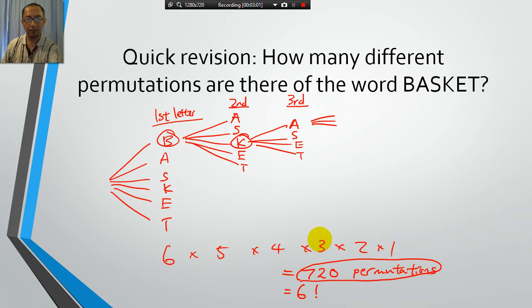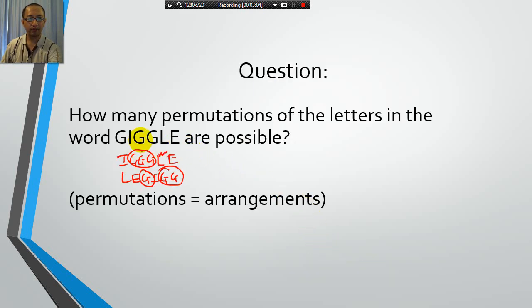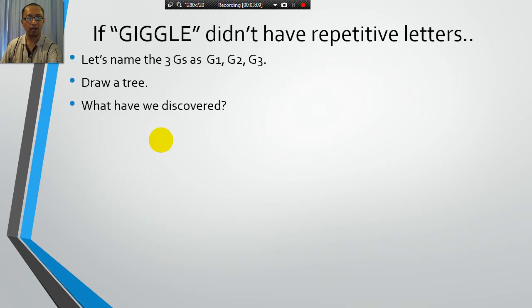Right, but now we have repetition. GIGGLE has three letters that are the same. So why does that matter? Well, if you draw a tree. If you draw a tree, G1, G2, G3, I, L, E. Alright, because we use different numbers here. G1 representing the first G, G2 representing the second G, G3 representing the third G. Alright, because we have three G's.